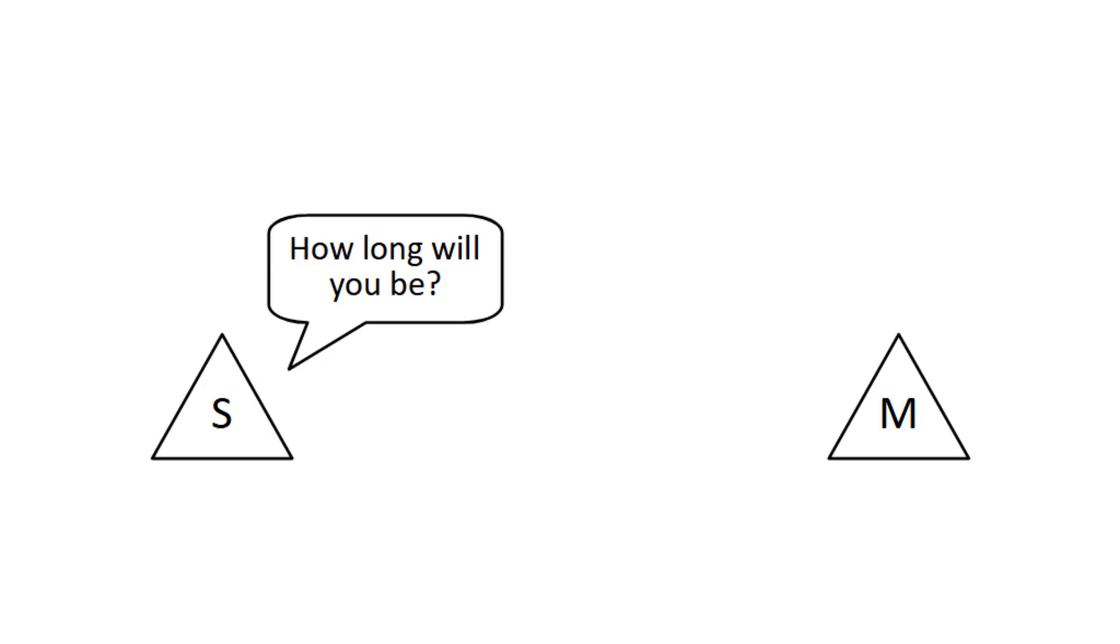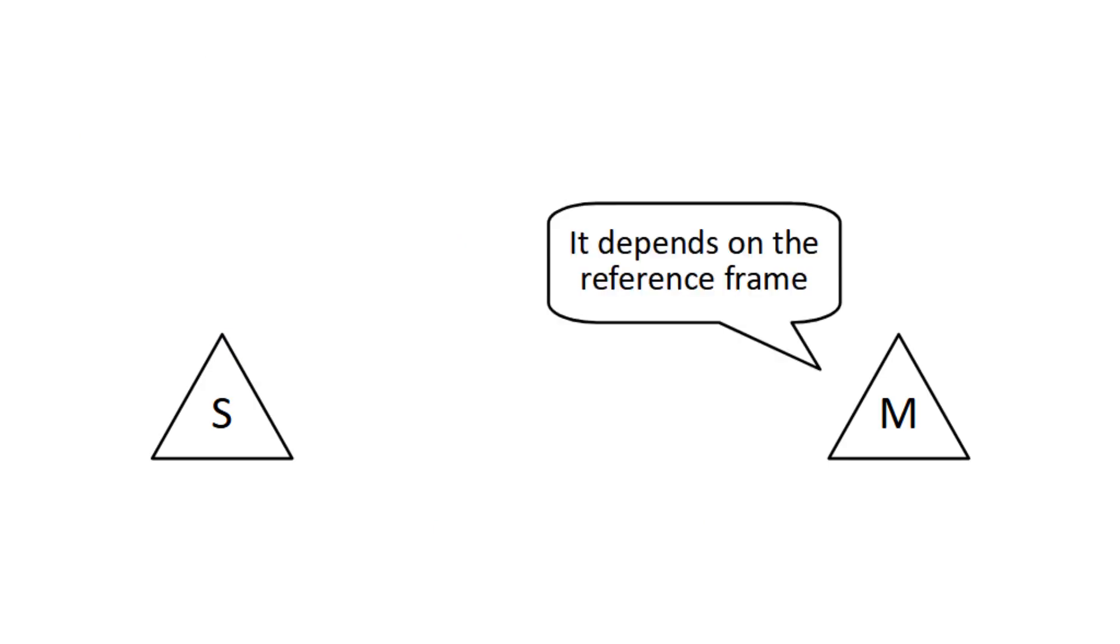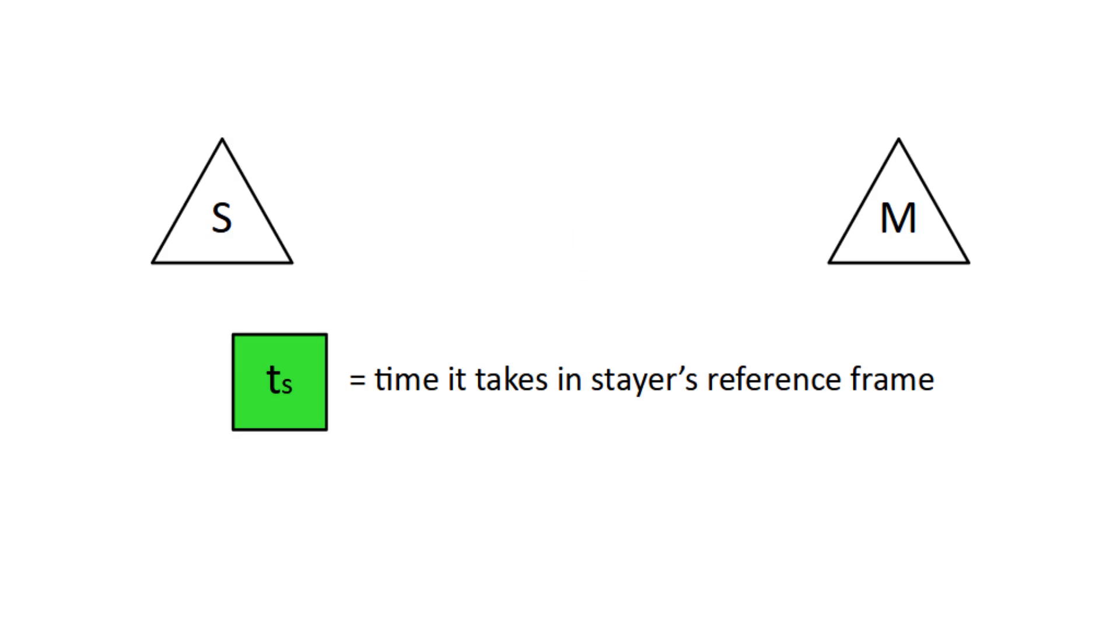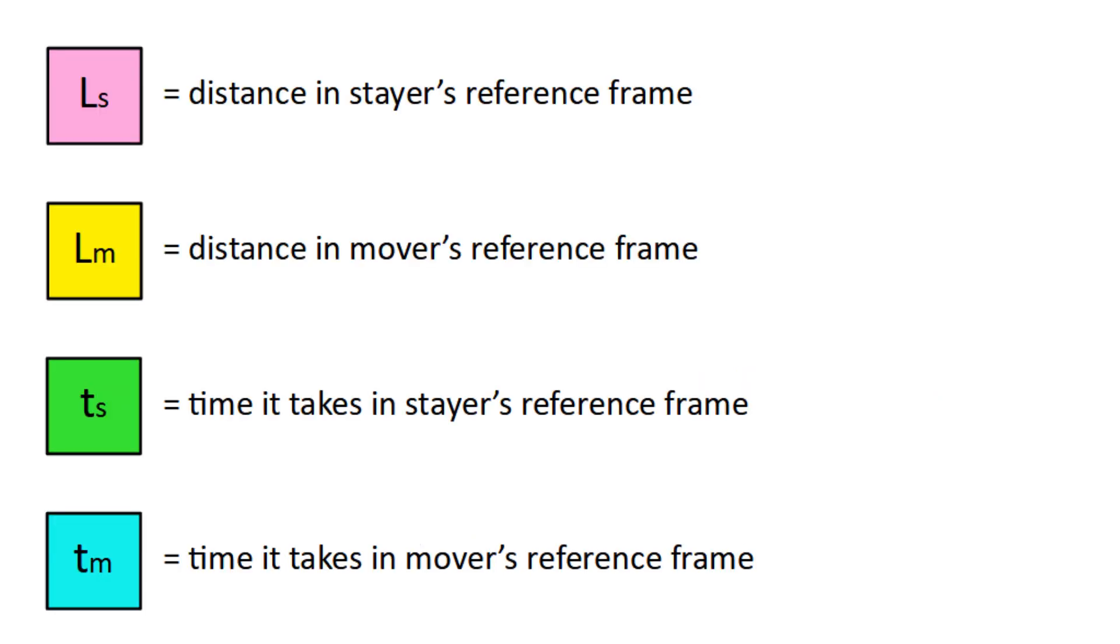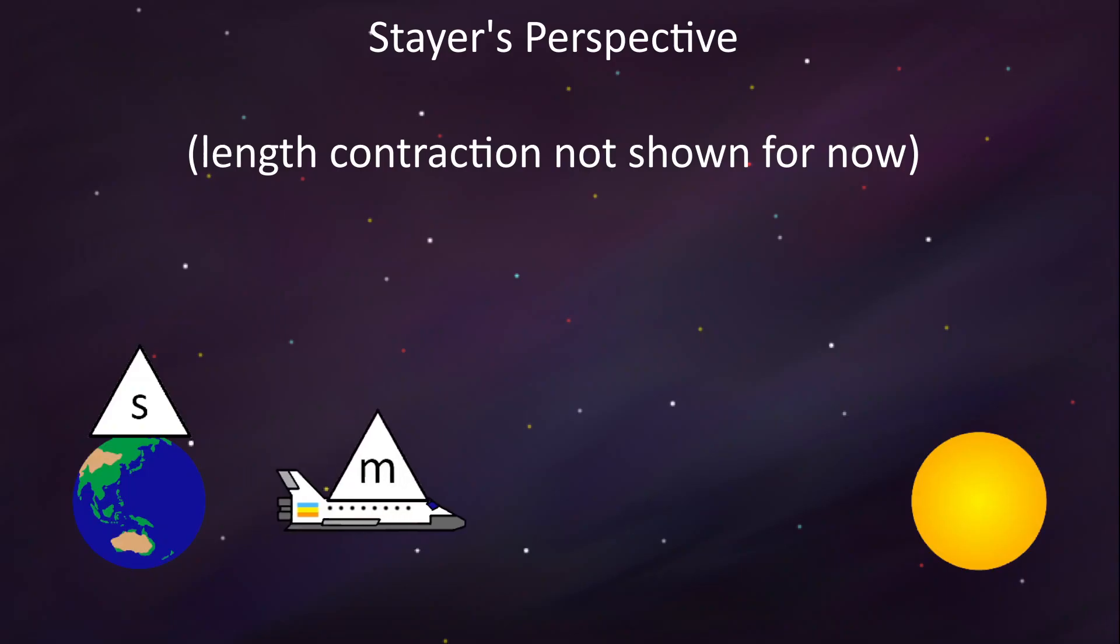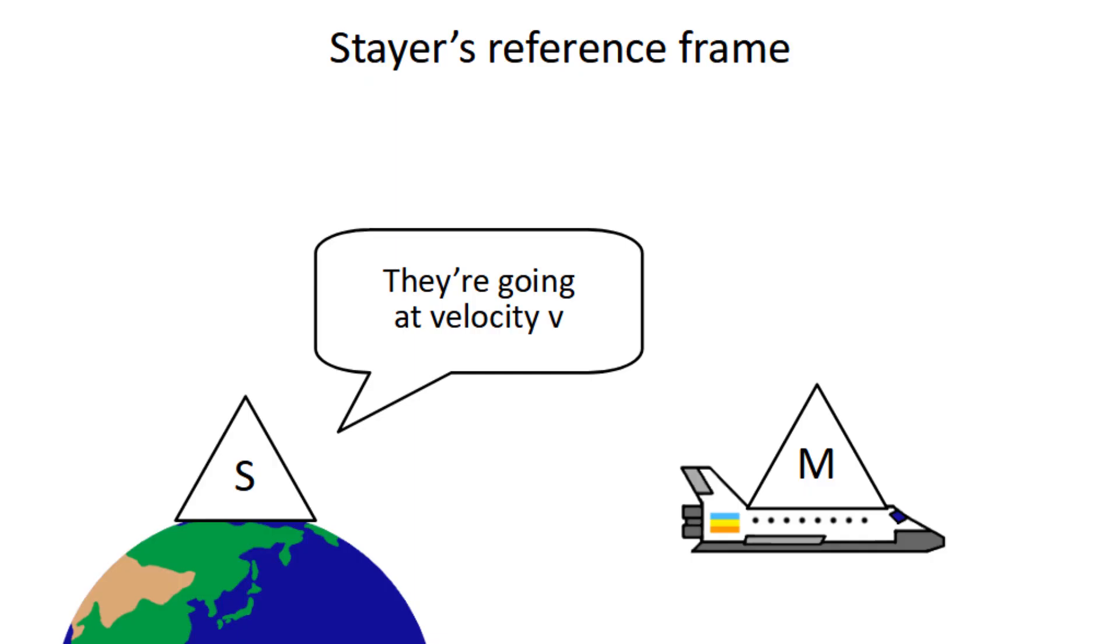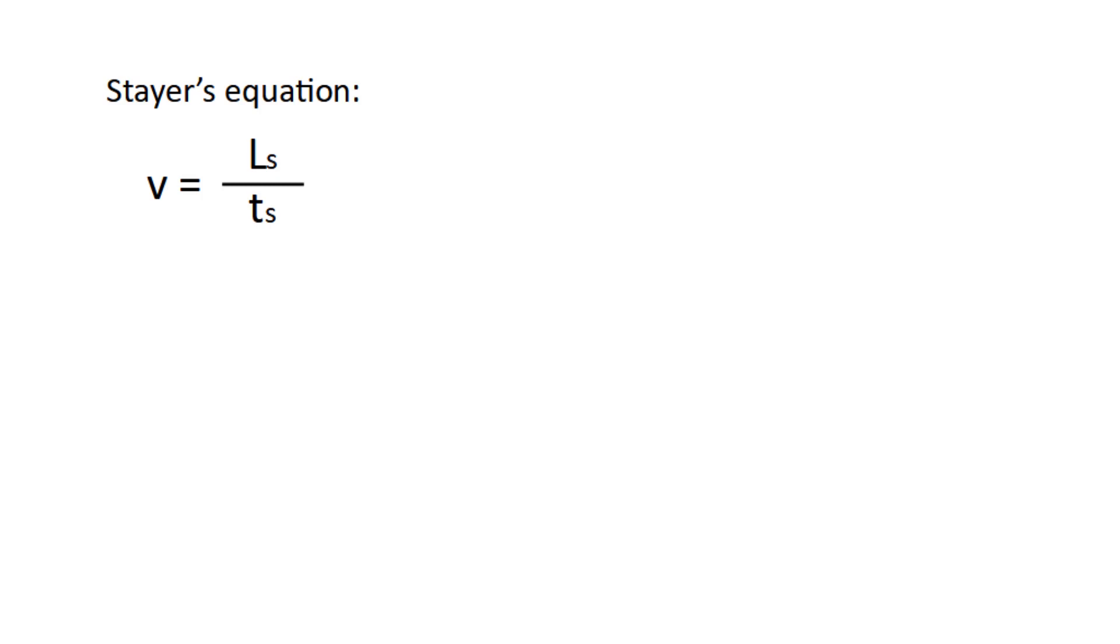So how long does it take for the mover to arrive? Well, it actually depends on your reference frame, because of time dilation. Time passes at different rates for the two observers, so we'll use TS for time taken in the stair's reference frame, and tm for time taken in the mover's reference frame. Now we have all the variables we need to form equations. We'll start in the stair's perspective. So in this reference frame, the mover travels at velocity v, the distance covered is ls, and the time it takes to get there is ts. Velocity is distance over time, so v equals ls over ts.